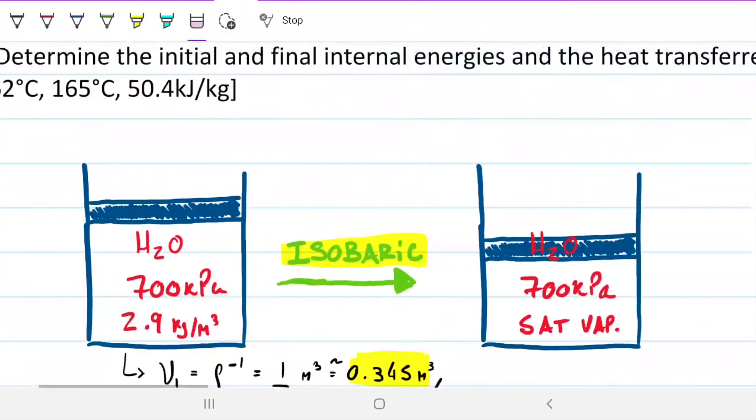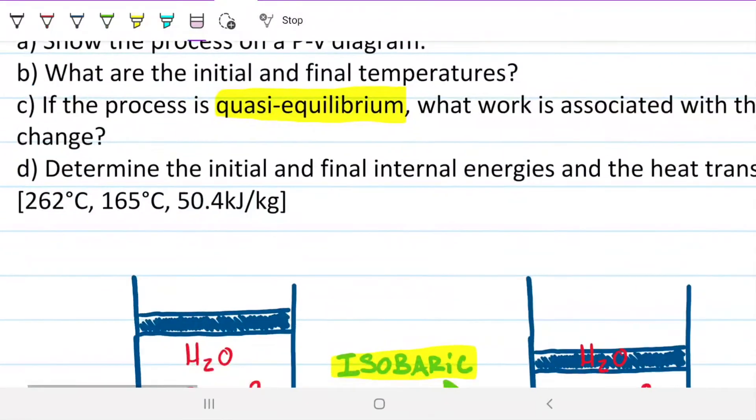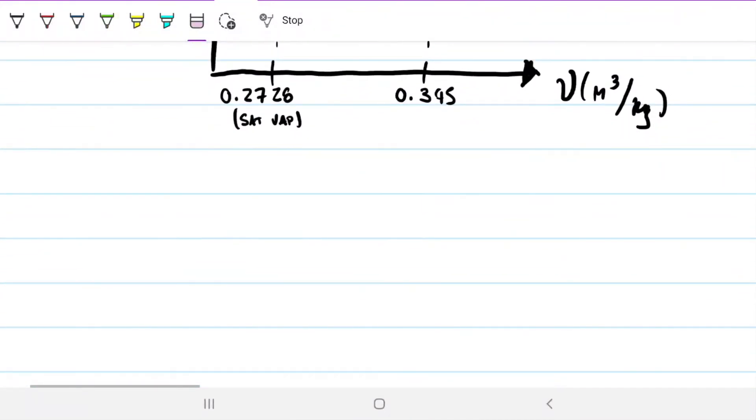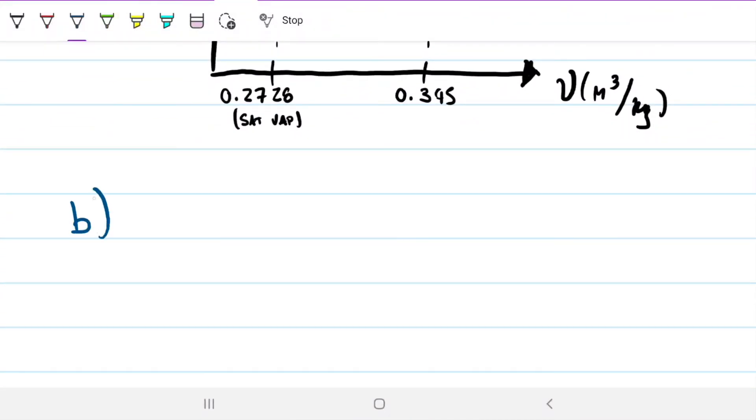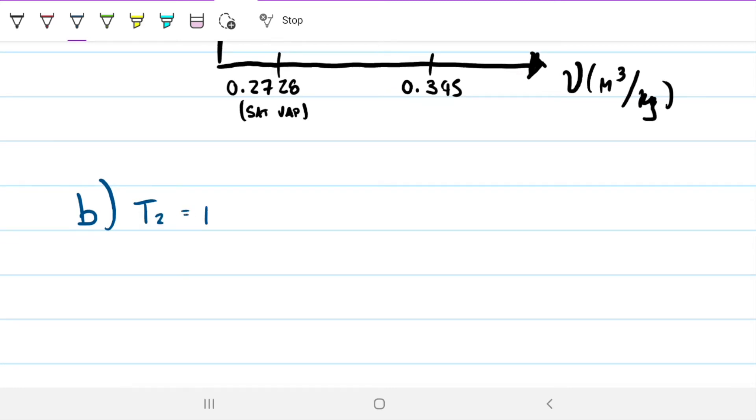Part B: What are the initial and final temperatures? The final temperature we know already. The final temperature is 165 because that's a saturated vapor. Since state two is a saturated vapor, then T2 equals Tsat. Tsat at 700 is 165 Celsius.